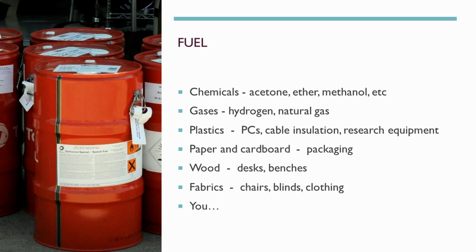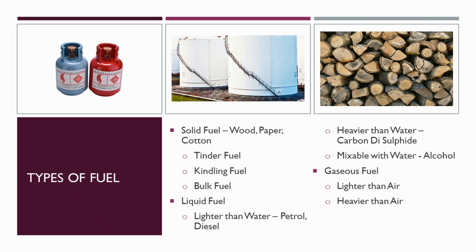Next is fuel. There are many fuels around us: chemicals, gases, plastics, papers, wood, cardboard, and fabrics — anything that can catch fire is called fuel. There are three types of fuel: solid fuel, liquid fuel, and gaseous fuel. Solid fuels such as wood, paper, and cotton can be sub-classified into tinder fuel, kindling fuel, and bulk fuel.